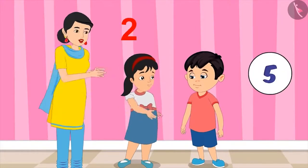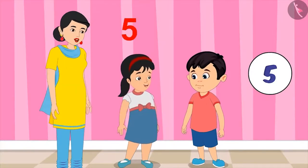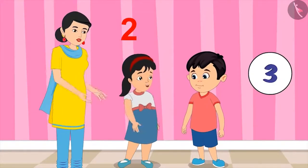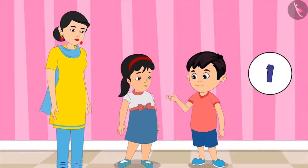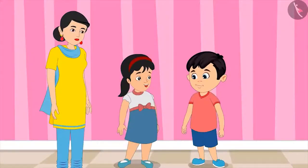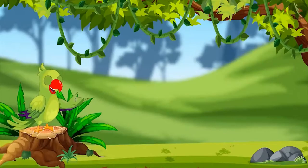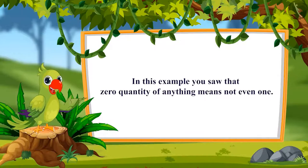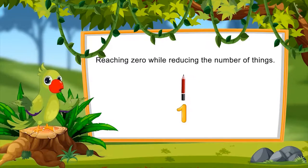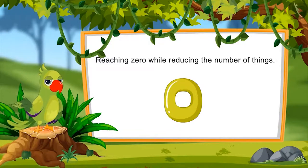Five. One clap, two claps, three claps, four claps, and five claps. Three. One clap, two claps, and three claps. One. One clap. Zero. Sister and mother were about to clap, but they quickly lowered their hands. Did you enjoy playing this game? So children, in this example, you saw that zero quantity of anything means not even one. Can you also one by one reduce the number of things to reach the number zero? Look at the number of things around you and reduce their number one by one until you reach the number zero.